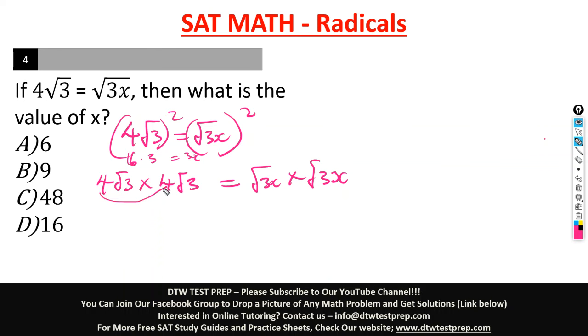So what do you do? You do 4 times 4 which is 16, and root 3 times root 3, it will give you 3. When two roots multiply, the roots cancel out and you have one digit, so times 3. Root 3 times 3 is 3.